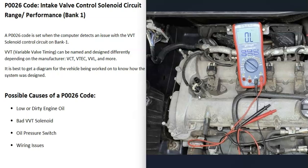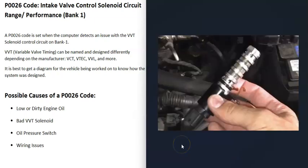These solenoids usually have 12 volts going to them — verify this for your specific vehicle. Some people use a jumper to send 12 volts to the solenoid and listen for a click. If it clicks, that usually means the solenoid is working. There are several ways to test these solenoids.